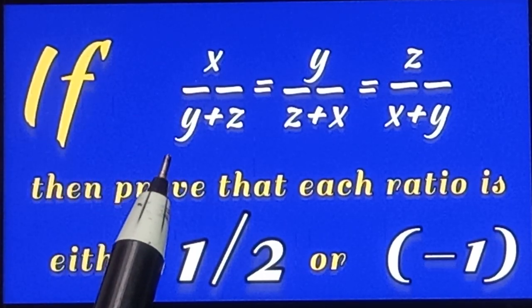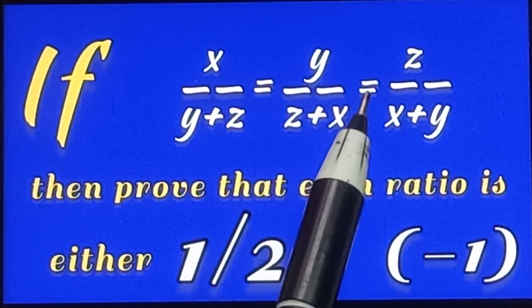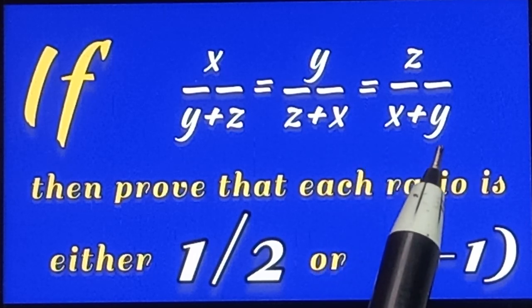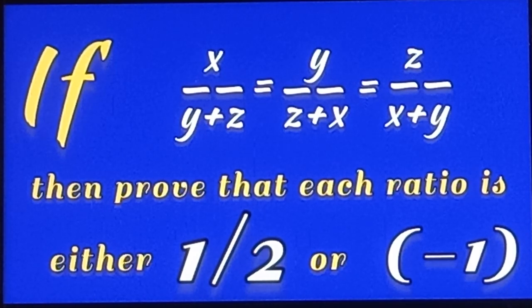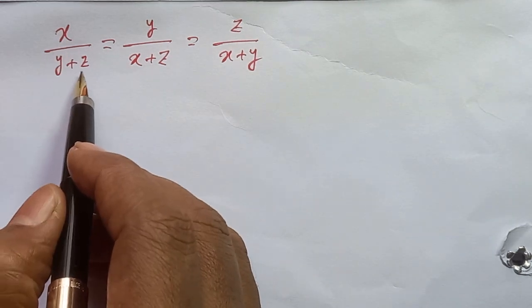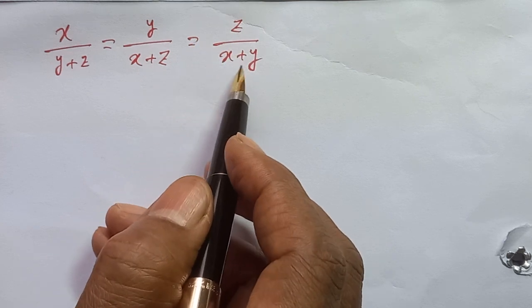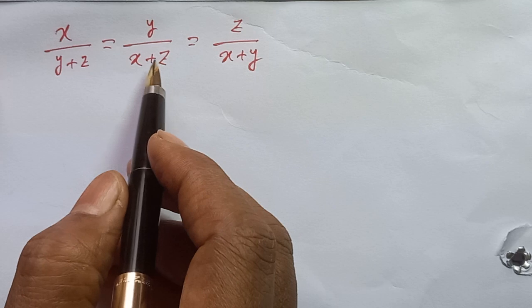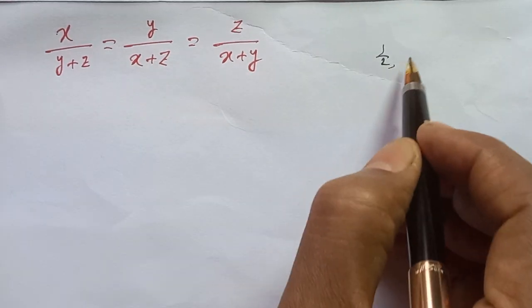If x by y plus z equals to y by z plus x equals to z by x plus y, then prove that each ratio is either half or minus 1.